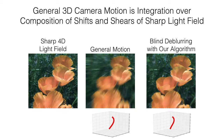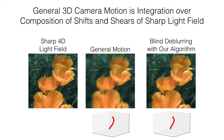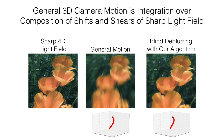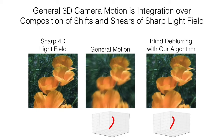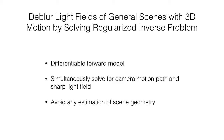The general light field blind motion de-blurring problem lacks a simple analytic approach and is severely ill-posed, because there is an infinite set of pairs of sharp light fields and motion paths that explain any observed motion-blurred light field. We propose a practical light field blind motion de-blurring algorithm to correct the complex blurring that occurs in light fields by solving a regularized inverse problem.